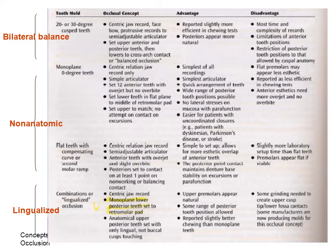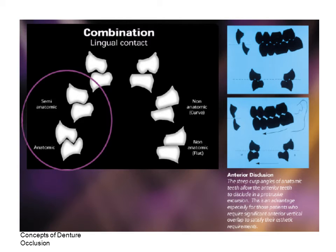This table illustrates the tooth form used, articulator and records requirements, advantages and disadvantages of each type of occlusal scheme. We will look at bilateral balanced occlusion first. The scheme uses anatomic or semi-anatomic teeth. Bilateral balanced is defined as the bilateral simultaneous contact of posterior teeth in centric as well as eccentric positions.